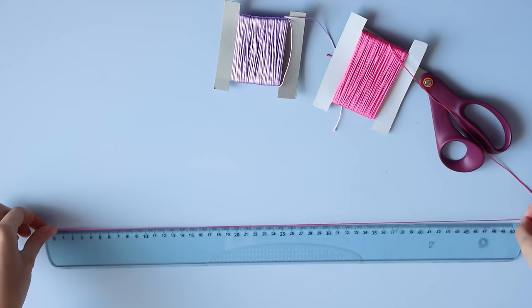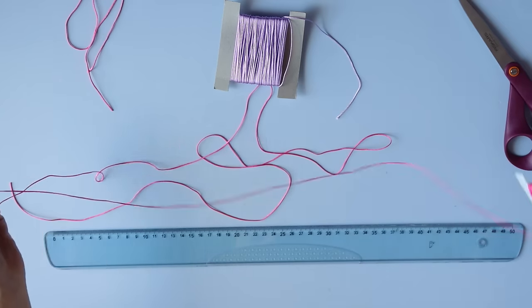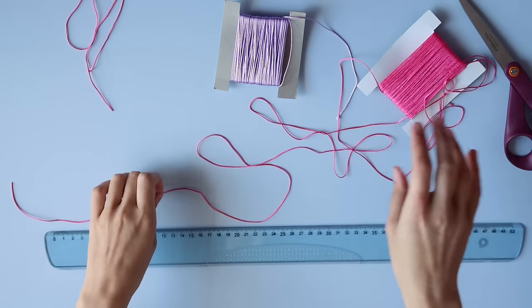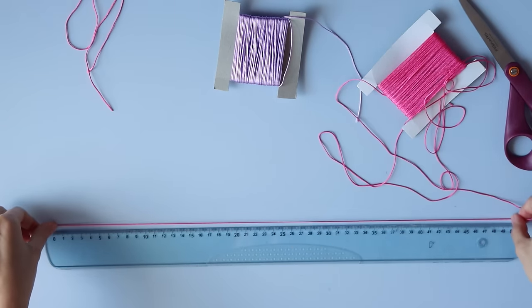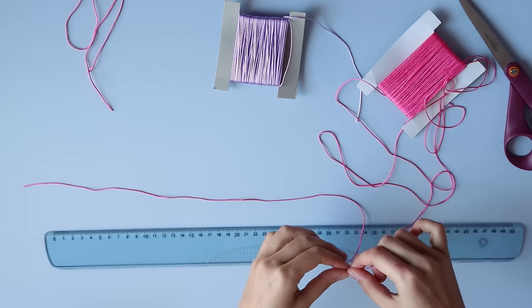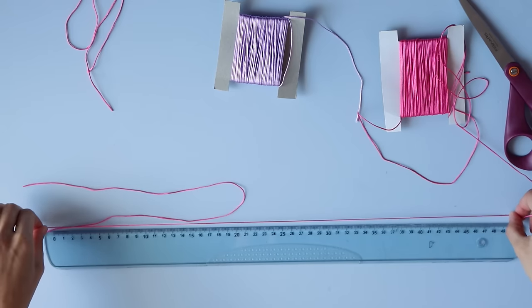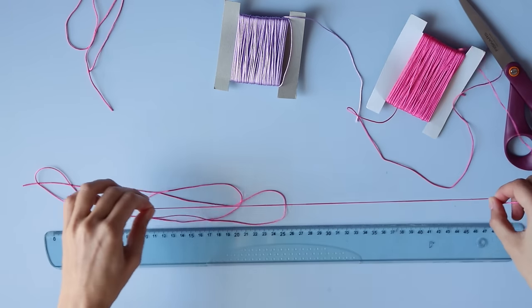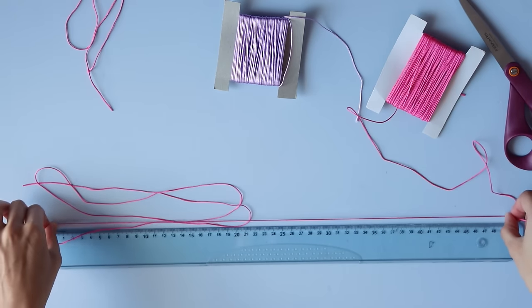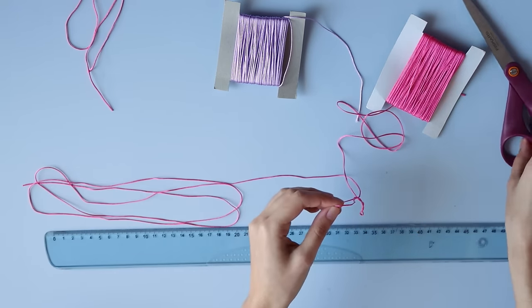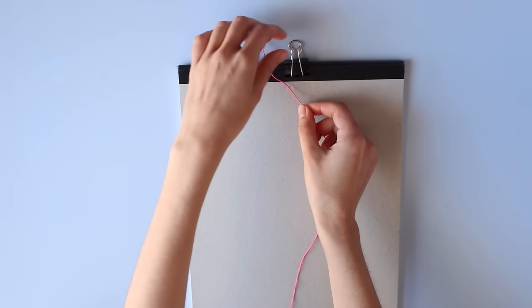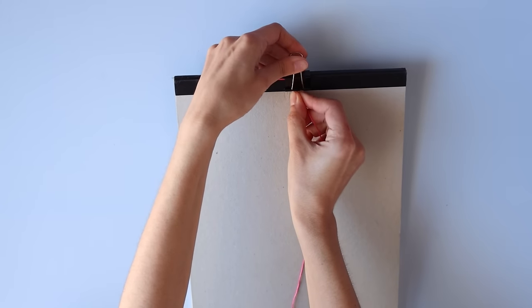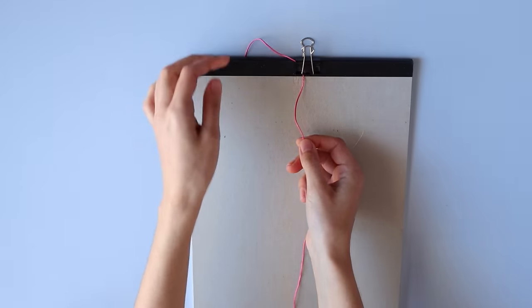Start by cutting one cord with half a meter and another one between 1.5 and 2 meters depending on the size of your wrist. Clip the ends of your smaller cord onto a board but leave it just a bit loose.